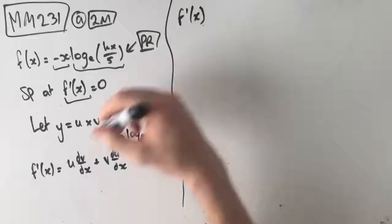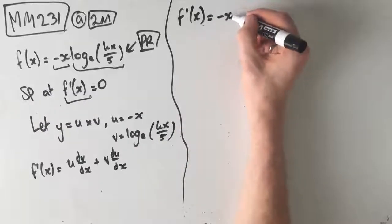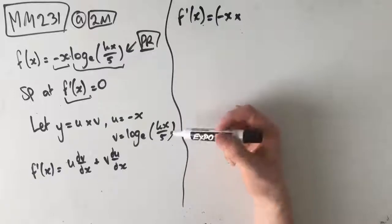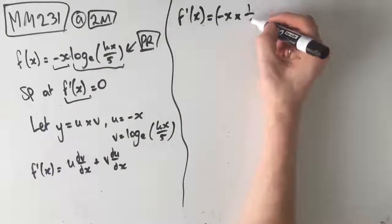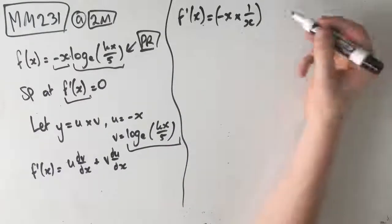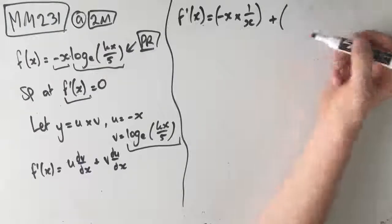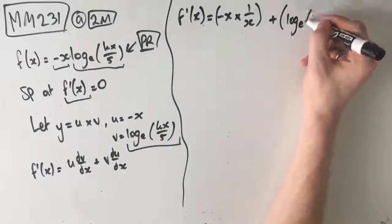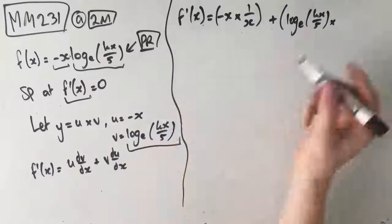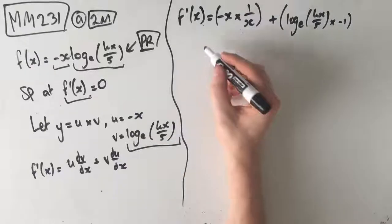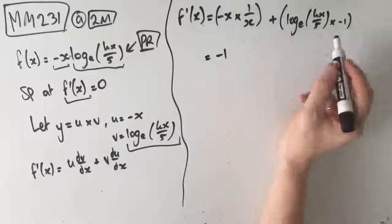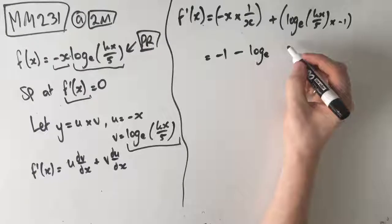We just sub in our values. u equals negative x, so negative x times dv/dx, which is simply 1 on x — the derivative of log e of kx on 5 is just 1 on x. We don't have a calculator, so we do this by hand. Plus v, which is log e of kx on 5, times du/dx, which is negative 1. We end up getting negative x on x, which is just negative 1, take away log e of kx on 5.